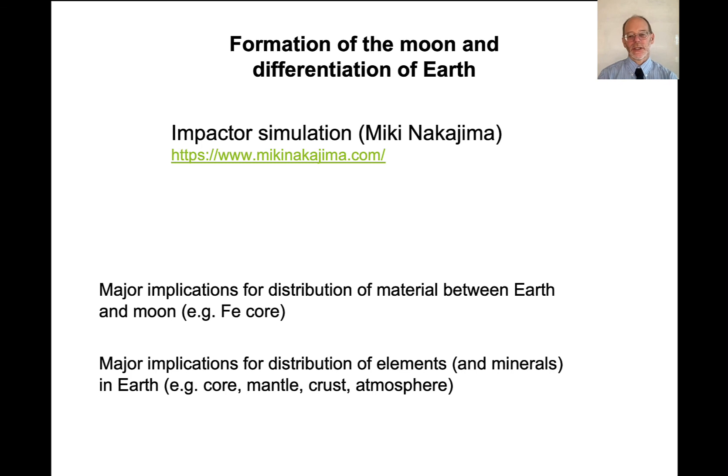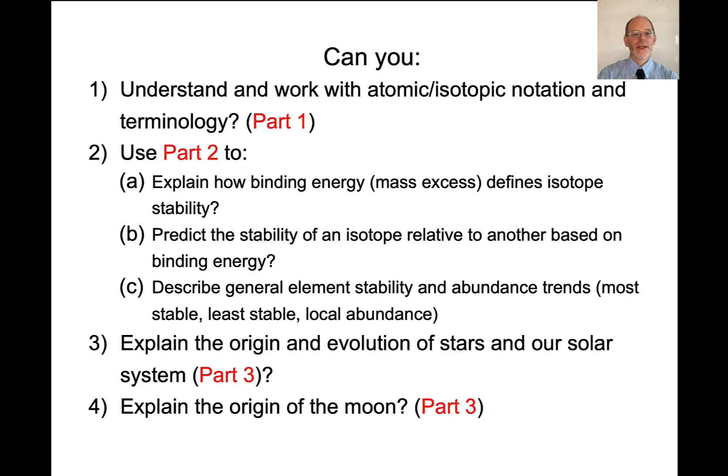So we have a core, a mantle, a crust and an atmosphere. And that's because of how the elements distribute themselves after this impact occurs. The impact essentially melts the Earth. OK, so the Earth, the surface of the Earth turns into a magma ocean. And so this degases all of the gases like the noble gases and water. Those all go up to form the atmosphere. The metals sink to form the core of the Earth. And then what's left over is the mantle.